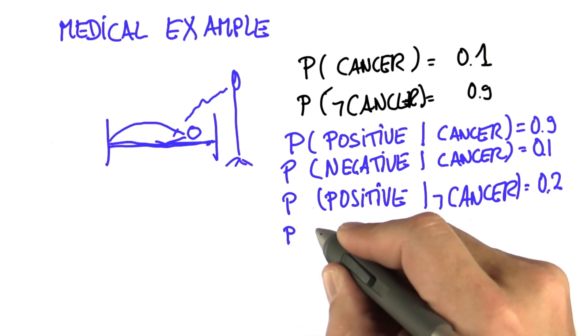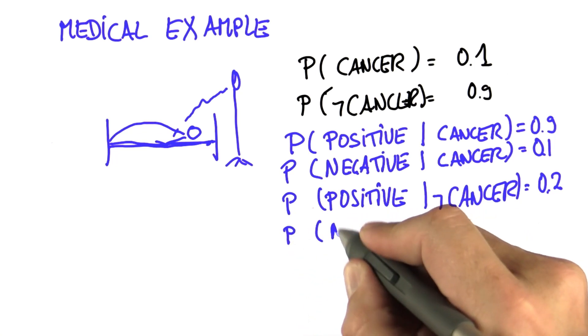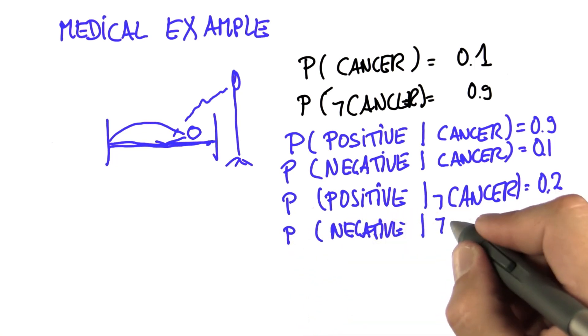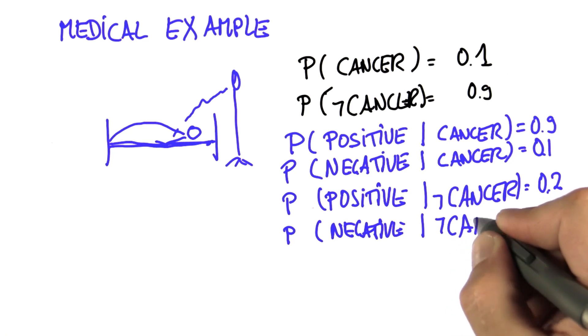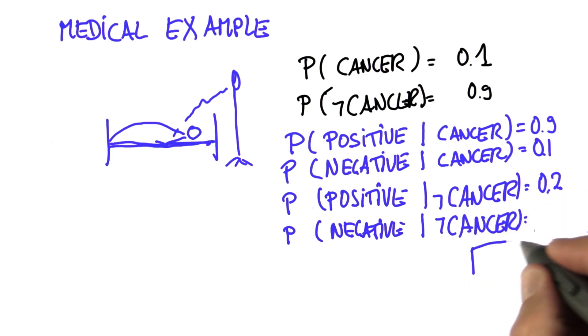You can now tell me what's the probability of a negative outcome, in case we know for a fact the person doesn't have cancer. So please tell me.